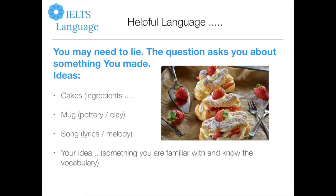Some helpful language. You may need to lie here because you may not remember something you have made. Here are some ideas you could describe or make up. Talking about cakes — I'll go into more detail on that in the next slide. Other possibilities include mugs, pottery made out of clay, or songs — the words, the lyrics, the melody. Choose something you are familiar with and know the vocabulary for. Don't choose something you don't know the English for.